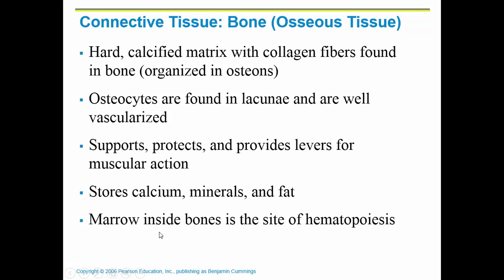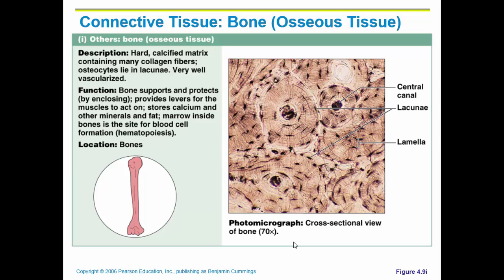Marrow inside the bones — specifically red bone marrow — is the site of hematopoiesis, which is the making of blood cells. This is what compact bone looks like specifically. Spongy bone looks different, but compact bone is organized into these nice circles called osteons. This whole structure is an osteon. The central space is called a central canal or Haversian canal, and the osteocytes are scattered throughout.